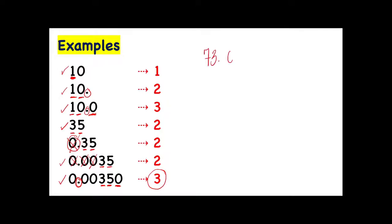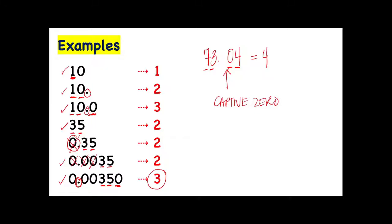How about 73.04? How many significant figures do we have? We have four significant digits: the non-zero digits and the zero. This zero is significant because it is considered a captive zero — a zero between non-zero digits. As we know, captive zeros are significant, so that's why we have four significant digits in this example.